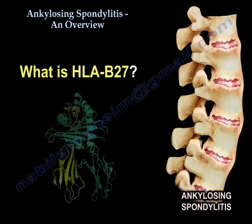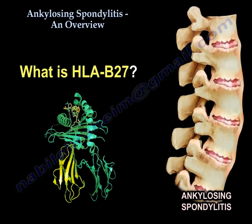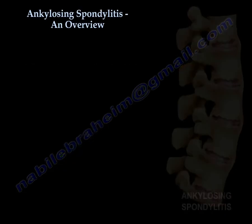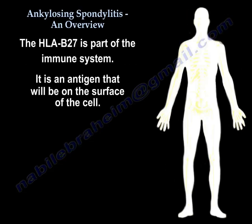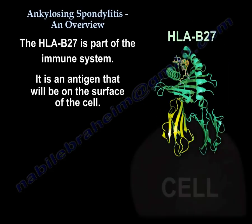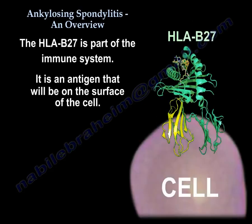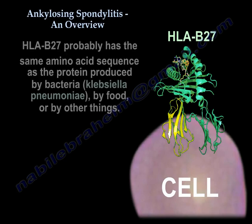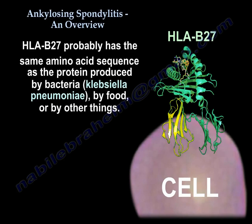What is HLA-B27? The HLA-B27 is part of the immune system — it is an antigen that sits on the surface of cells. It probably has the same amino acid sequence as a protein produced by Klebsiella pneumoniae bacteria, or by food, or by other environmental triggers.